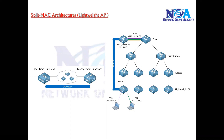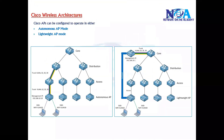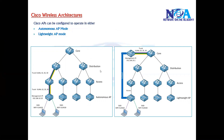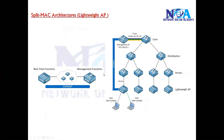The next thing we'll try to understand is the split MAC architecture, also called lightweight access point architecture. As a quick recap from the previous discussion, we covered wireless architecture with two modes of implementation. The first mode has no WLC, where each access point is managed individually in autonomous mode. Here we'll discuss the lightweight access point mode, or split MAC architecture, where WLC is used to control and manage multiple access points — a scalable solution.